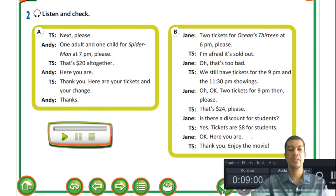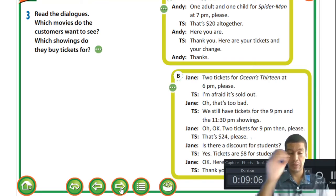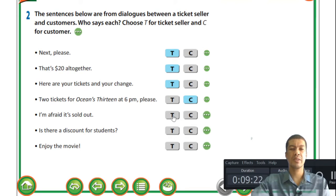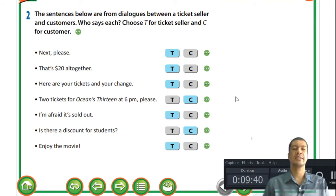Those were the two dialogues. Going back to the earlier activity - 'That's twenty dollars' and 'Here are your tickets' are the ticket seller; the customer requests the price; 'I'm afraid it's sold out' is the ticket seller; 'Is there a discount for students' is the customer; and 'Enjoy the movie' is the ticket seller. The answers match exactly as listed.